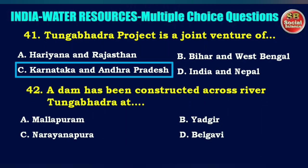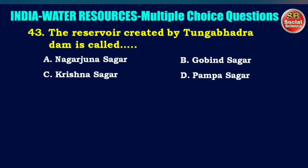A dam has been constructed across river Tungabhadra at — options are Mallapuram, Yadgir, Narayana Pura, or Belagavi. The right answer is option A: Mallapuram.